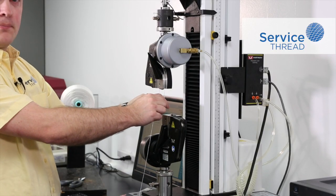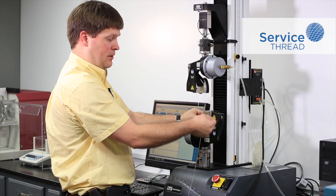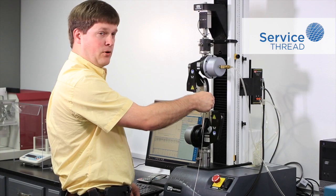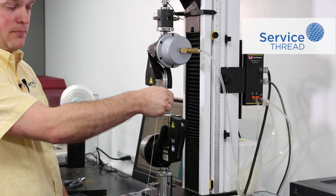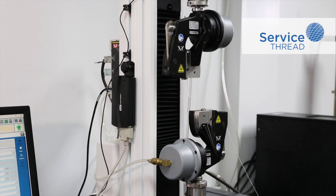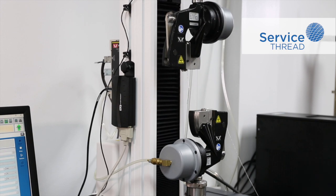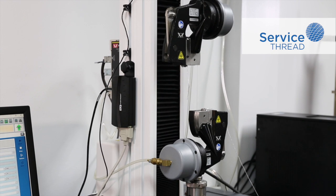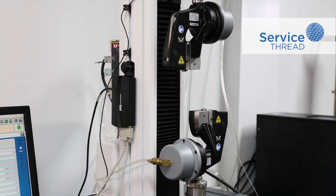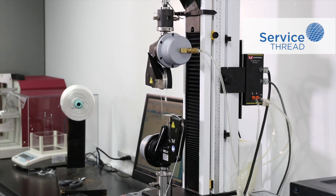To start the test, we'll insert the yarn into the upper grip, and then we'll follow up by wrapping the yarn around the lower grip and closing it. The machine will start automatically, and the values are recorded on the computer.